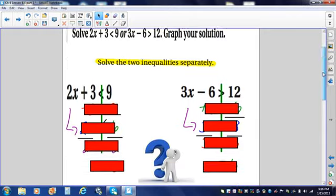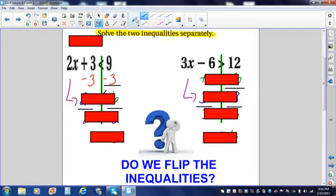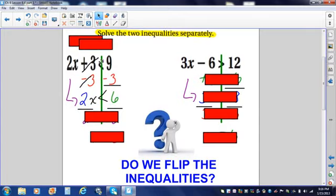So, let's do the one on the left first. I'm going to do the inverse of adding 3, which is subtracting 3. I do that on both sides. These cancel out. 9 minus 3 gives us 6. Bring down your inequality sign. Bring down the 2x. They're touching.